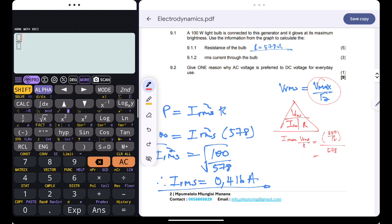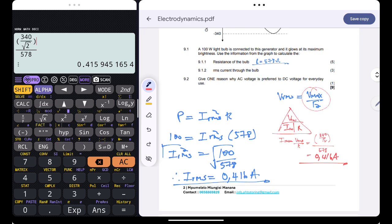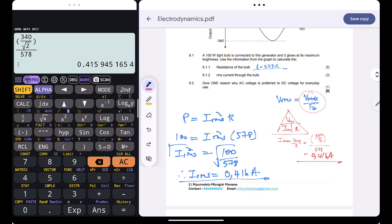Let's confirm that. It's just 340 divided by the square root of 2, all over 578. We still get the same answer, do you see that? It's the same thing, 0.416 amperes. So electrodynamics guys is there for the taking. Please do not lose these marks.